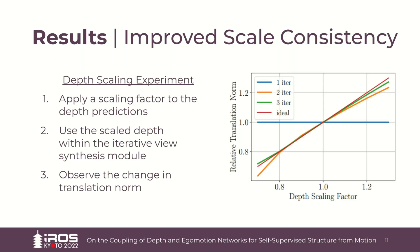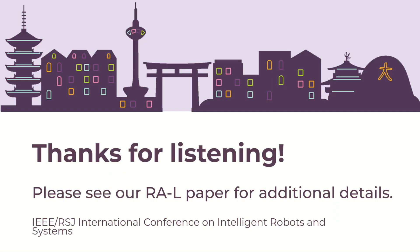Lastly, we conducted an experiment to show how our system can pass scale information between the networks. To do so, we modified the scale factor of the depth predictions within a test sequence, and then used these predictions within our feedback coupling scheme to iteratively produce the ego-motion predictions. Notably, we see that there is a linear relationship between the scale of the translation norm and the scale factor applied to the depth predictions. This indicates that our coupling scheme allows a common scale factor to be shared between the networks. Thanks a lot for listening. To hear more about this work, please feel free to read our paper, which is available as a publication in the Robotics and Automation Letters.